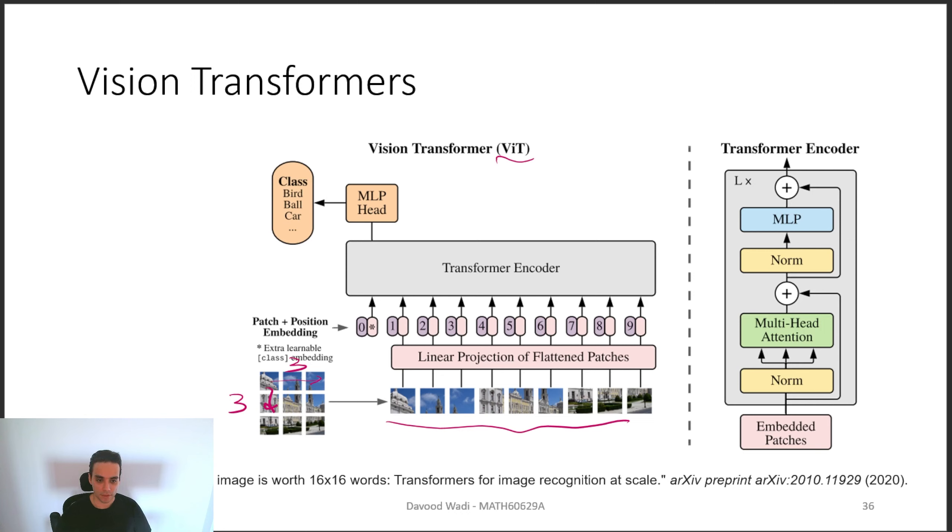And after we do that, we create the position embeddings, which is these numbers, one, two, three, four, all the way to nine. And similar concept to token embeddings, where we turn every patch of image into an embedding vector.